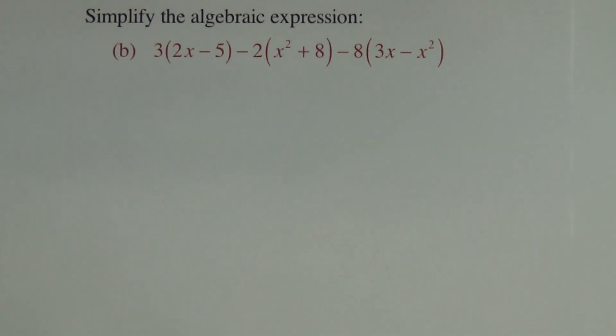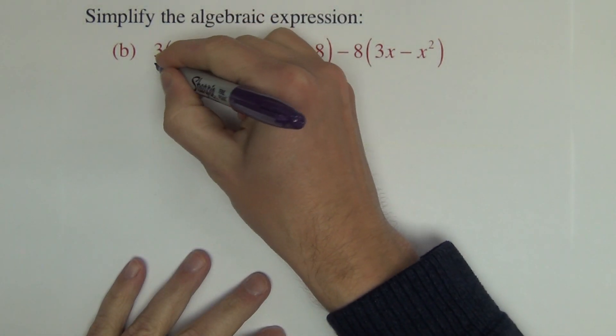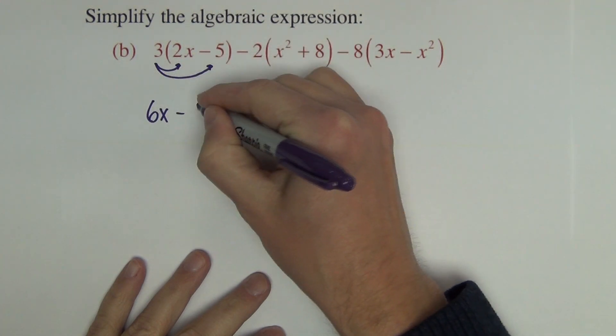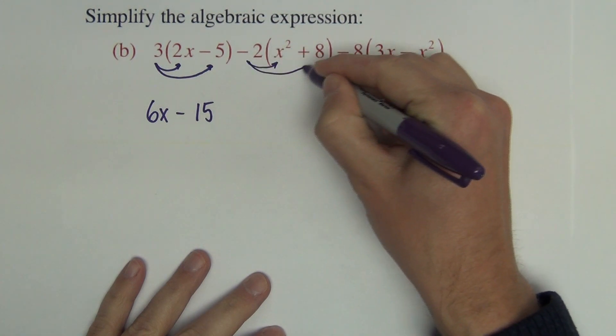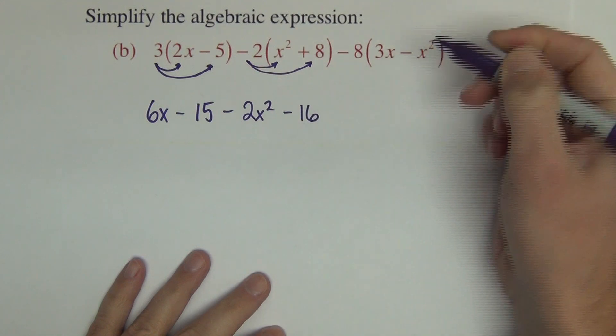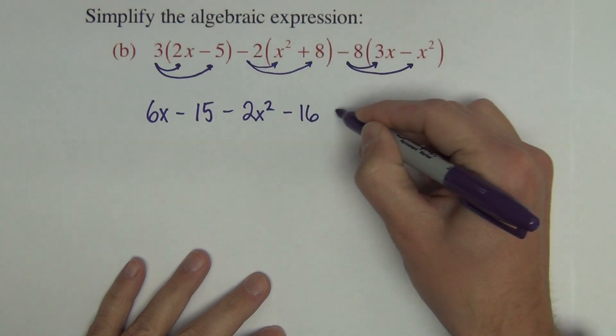Second example is the same directions, but we've got some distributive property to work out before we can add the like terms. We distribute 3 here, giving us 6x minus 15. We distribute negative 2 here, giving minus 2x squared minus 16. We distribute negative 8 on this one, giving us negative 24x plus 8x squared.